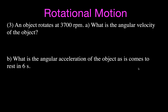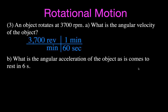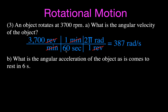Example 3: An object rotates at 3,700 revolutions per minute. We need the angular velocity in radians per second. First convert minutes to seconds (dividing by 60), then convert revolutions to radians (multiplying by two pi). So: 3,700 times two pi divided by 60 equals approximately 387 radians per second.